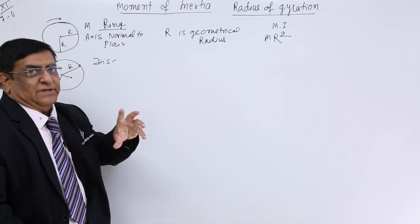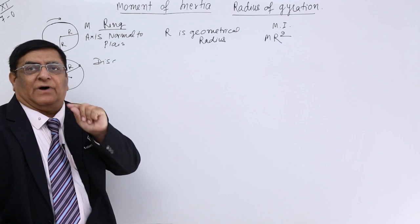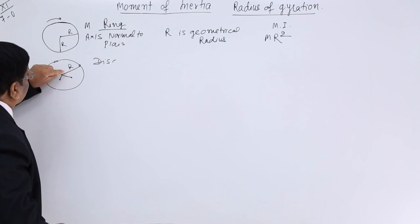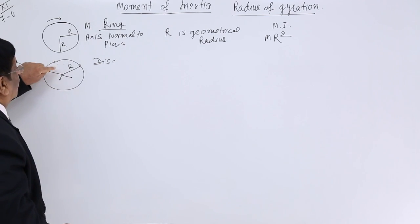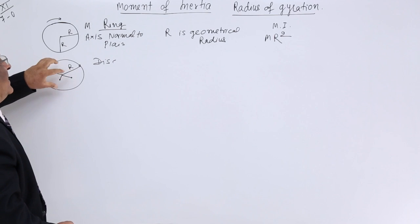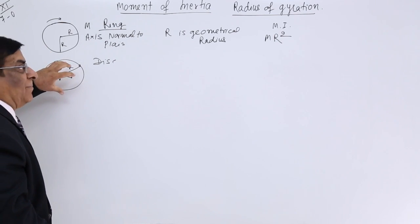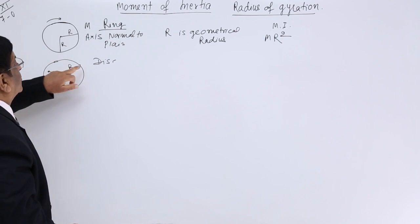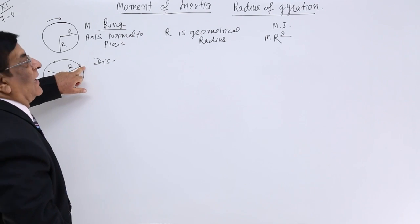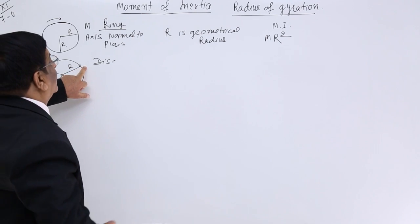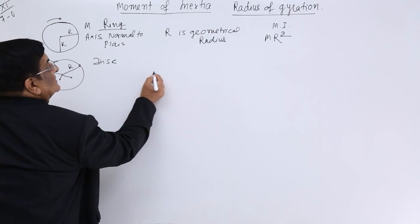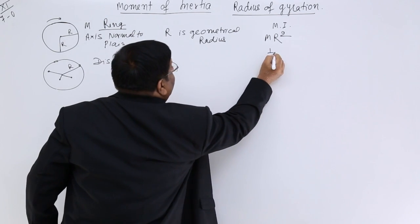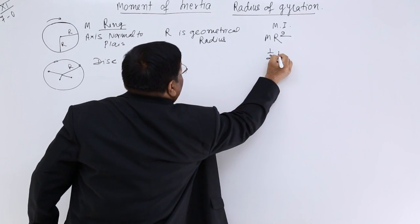By the method of integration, we find the moment of inertia for the different rings, add them up — it goes from 0 to maximum r — and what we get for moment of inertia here is half mr².